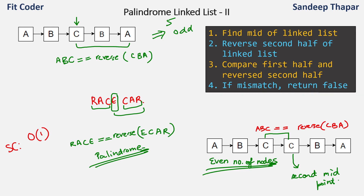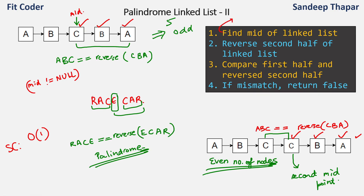We traverse to match until the midpoint reaches null. Starting from c, we match that node, then b, then a, then it reaches null — so we match three nodes. This problem is a combination of two sub-problems: first finding the midpoint and then finding the reverse. These are two separate problems I have already explained in my previous videos.